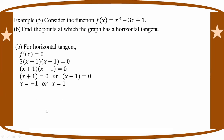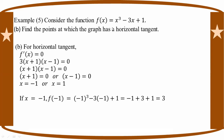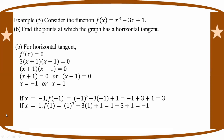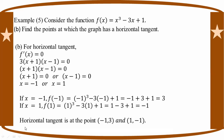If A equals minus 1, then F of minus 1 equals minus 1 cubed minus 3 times minus 1 plus 1 equals 3. If A equals 1, then F of 1 equals 1 minus 3 plus 1 equals minus 1. So the horizontal tangents are at the points minus 1, 3 and 1, minus 1.